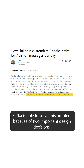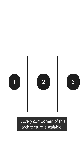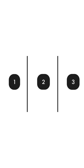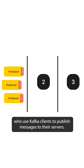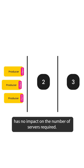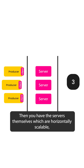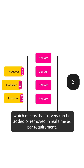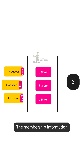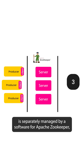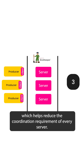Kafka is able to solve this problem because of two important design decisions. Number one, every component of this architecture is scalable. First, you have producers who use Kafka clients to publish messages to their servers. Increasing the number of publishers has no impact on the number of servers required. Then you have the servers themselves, which are horizontally scalable, meaning servers can be added or removed in real time as per requirement. The membership information is separately managed by a software called Apache Zookeeper, which helps reduce the coordination requirement of every server.